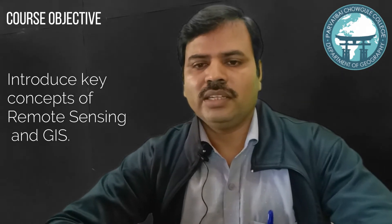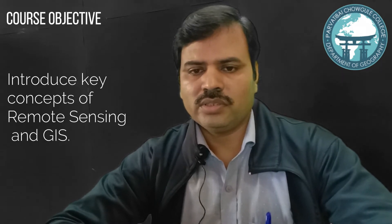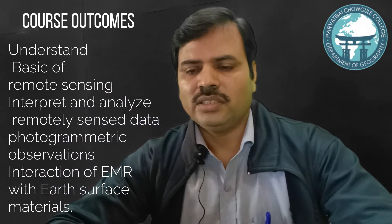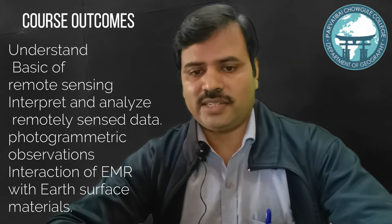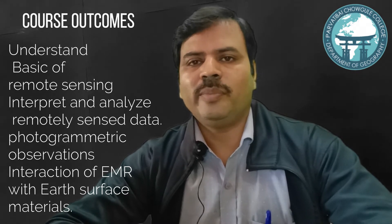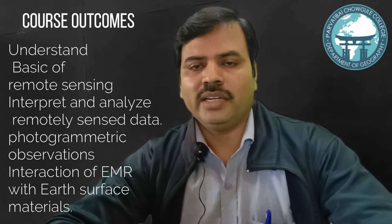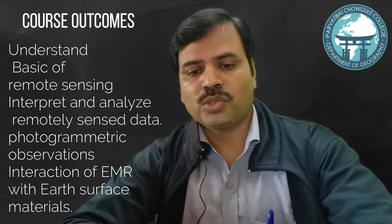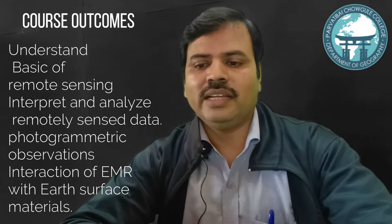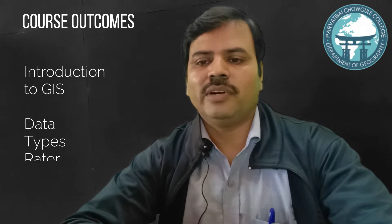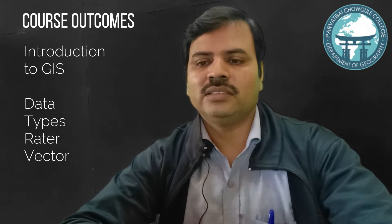The course is designed with the objective to introduce the key concepts of remote sensing and GIS. The course outcomes: at the end of this course, students will be able to understand the basic science of remote sensing, interpret and analyze remotely sensed data, carry out photogrammetric observations and calculate area, height, depth and changes. Students will also understand the fundamentals of electromagnetic radiations and their interaction with earth surface materials, and will be introduced to the fundamentals of GIS.